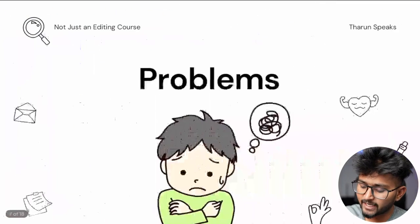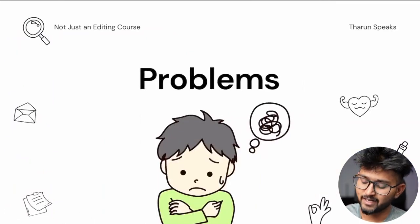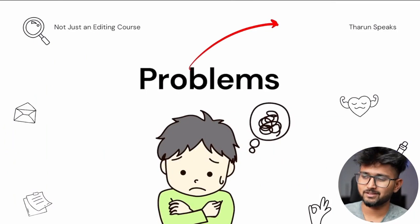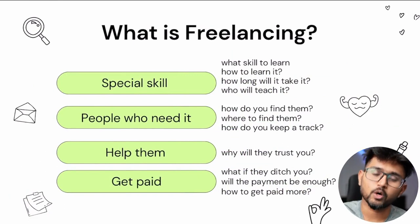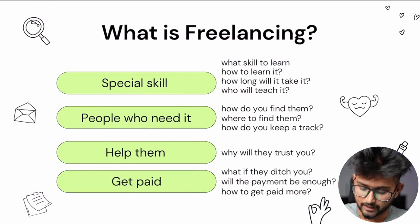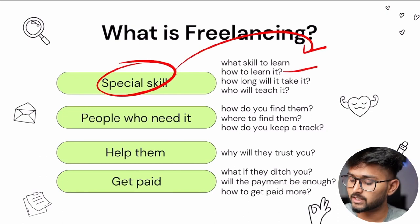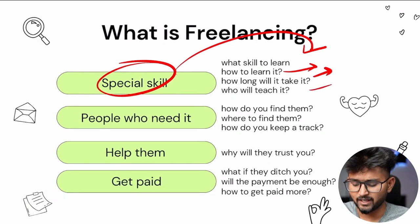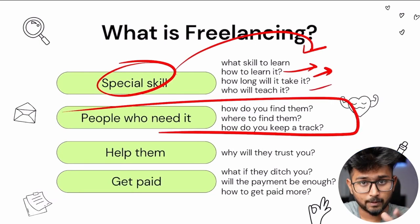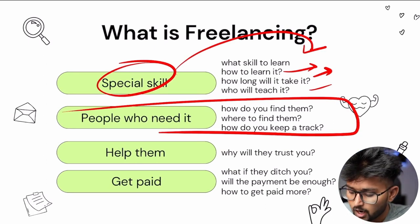You have a special skill, you know people who actually need that skill, you help them, and then you get paid. That's it — very simple. But now there are so many problems attached to it. When you want to get started with freelancing, what does a normal person need? They need a special skill — so what skill to learn, how to learn it, how much time will it take, and who will teach it? And the second thing: for people who need that skill, how do you find them, where do you find them, how do you keep track of a client?